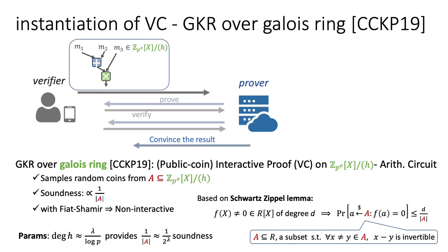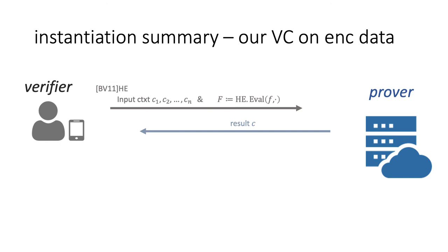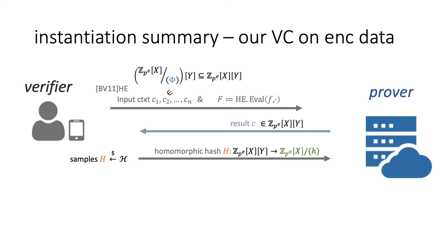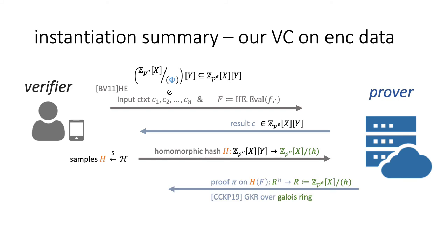With this protocol over the Galois ring, one can directly prove and verify computations over the Galois ring. We also remark that the degree of H, or the degree of the Galois ring, can be set similarly as for the homomorphic hash to make the soundness probability negligible. To summarize our instantiation: a verifier sends a ciphertext and a computation function to the prover, then the prover gives back the result. The ciphertext and the result are regarded as bivariate polynomials over integers modulo a prime power, by delaying the modular reduction by Φ to the end. Then the verifier samples a homomorphic hash, which transforms the ciphertext and computations to elements and computations of a Galois ring. In response, the prover sends a proof on this Galois ring with the GKR protocol, then the verifier can verify the result. Finally, the verifier gets the result by computing modular Φ, then decrypting the ciphertext.